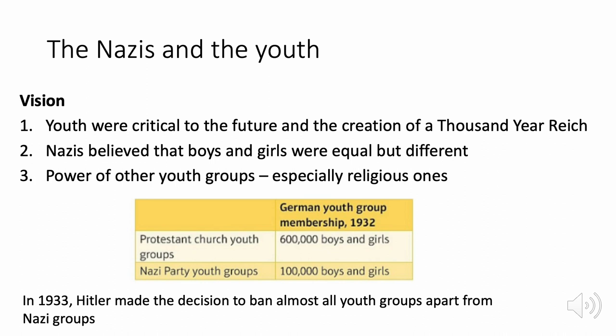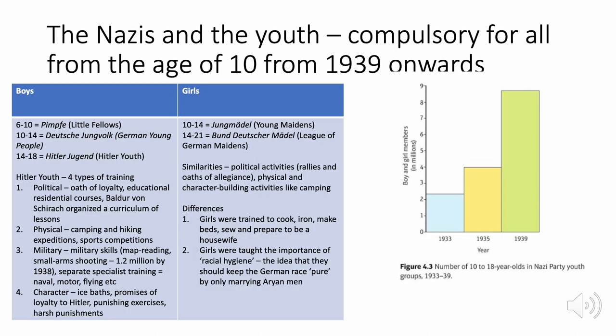Hitler's vision for youth was critical to his future plans. Boys and girls were seen as equally important but with different roles. In 1933, other youth groups — such as the Protestant church youth group with 600,000 members — were banned. Youth groups were now organised by age: the Pimpf (ages 6–10), the Deutsches Jungvolk (10–14), and the Hitler Youth (14–18). Hitler Youth training covered four areas: political training (loyalty to Hitler), physical training (camping, hiking), military training (map reading, small arms), and character training (discipline, ice baths, punishing exercises).